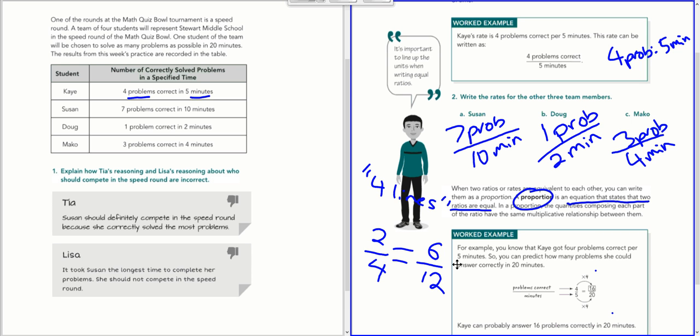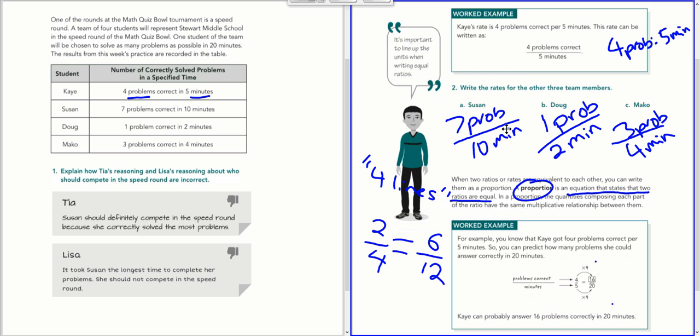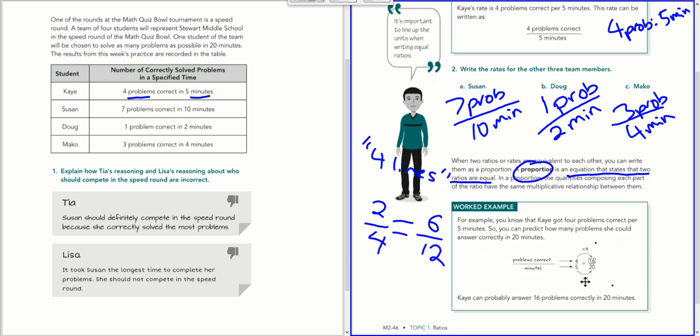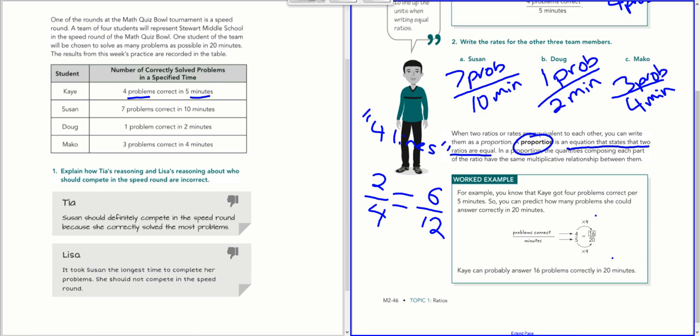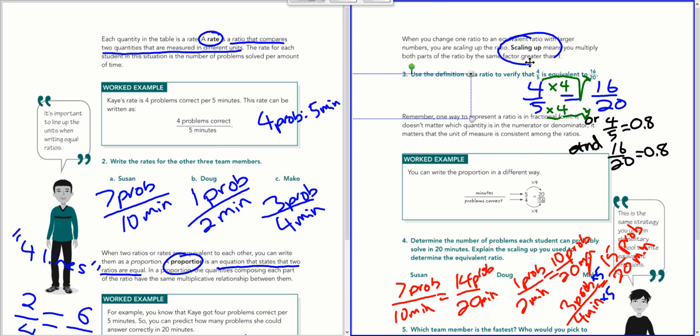How do we get from K's four problems correct in five minutes to something else? Well, you ask yourself how do I get from five to twenty? You need to multiply by four. So you multiply by four down here, you need to multiply by four up here. We would get 16 out of 20, so you could predict that in 20 minutes at this rate she would have 16 problems answered.